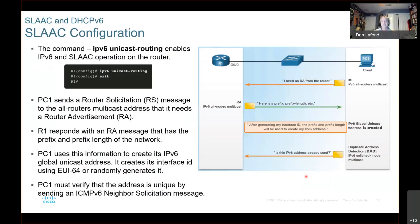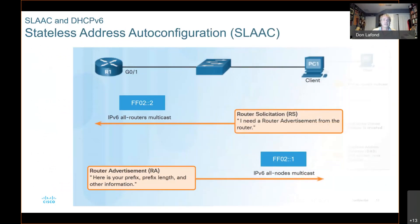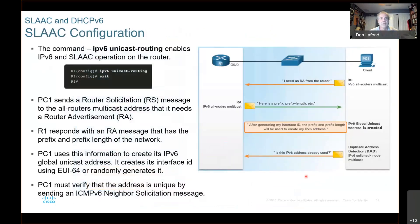If it's already enabled, it won't hurt a thing. PC1 sends a router solicitation message to the all-routers multicast address, which is FF02::2, saying it needs a router advertisement. The router, using the all-nodes multicast address FF02::1, responds with the prefix, prefix length, and other information like domain name.